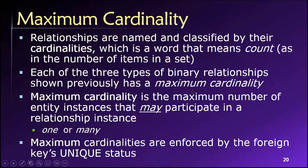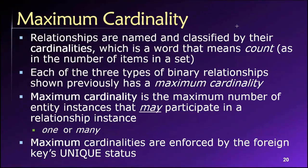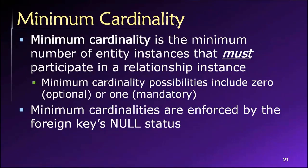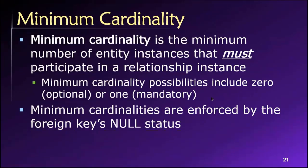Returning to our slides, connecting this visually: maximum cardinalities are enforced by the foreign key's unique status, and minimum cardinalities are enforced by the foreign key's null status. Someone figured all this out and we can use these designs to enforce the number of instances of one entity that are allowed to participate with the other. Thank you.